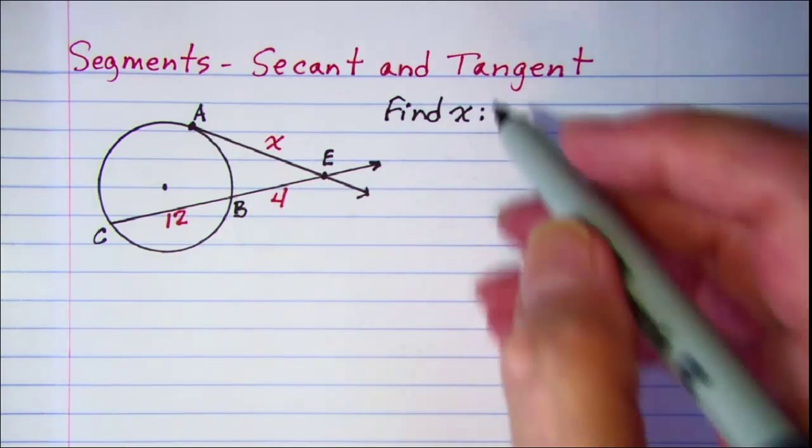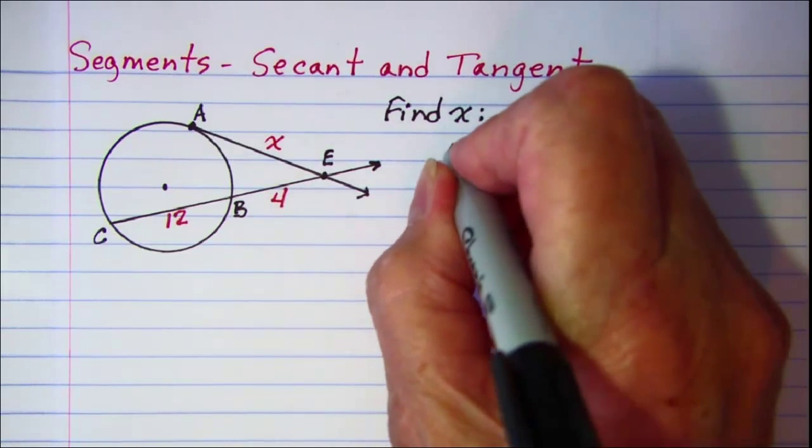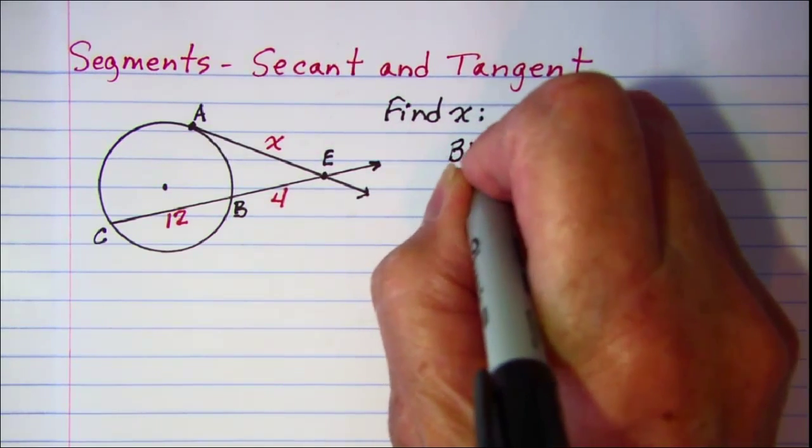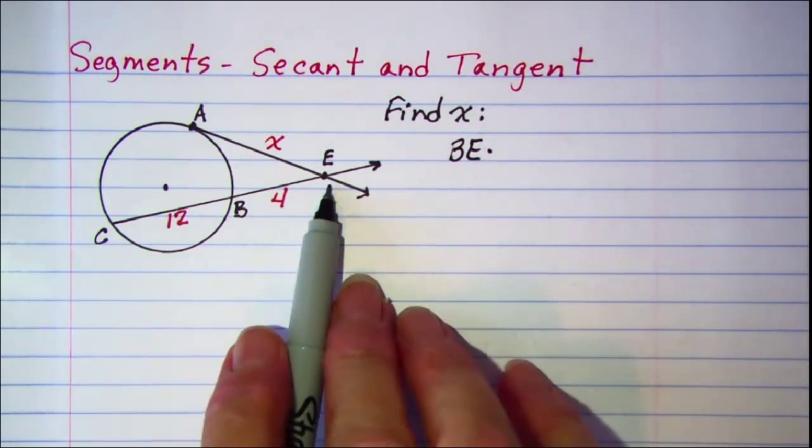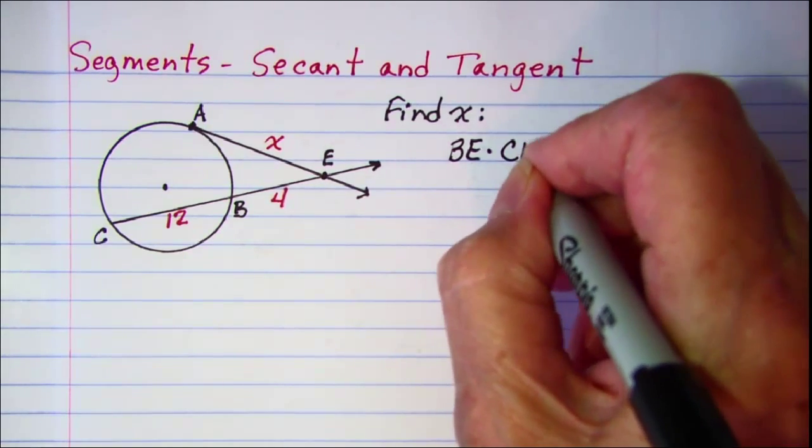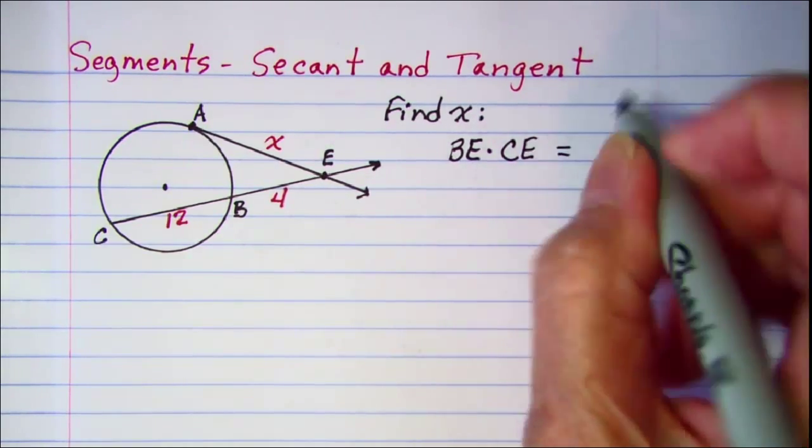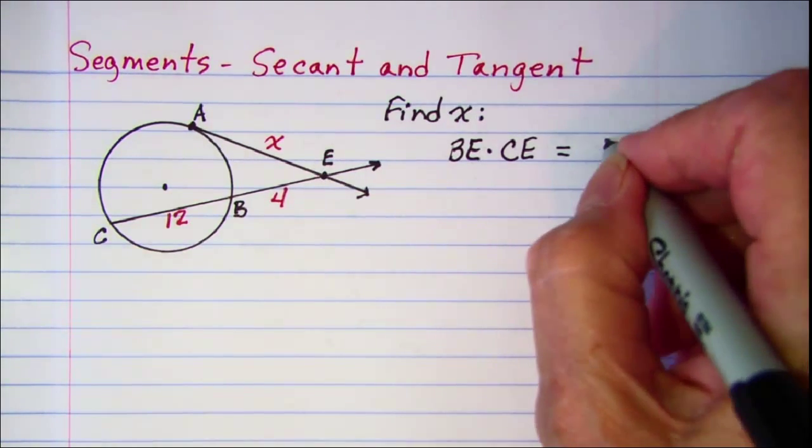So in our problem, the outside part which is BE multiplied by the whole secant segment which is CE is going to equal the tangent segment squared, so AE squared.